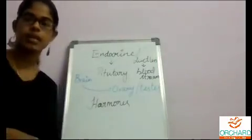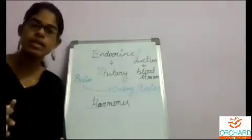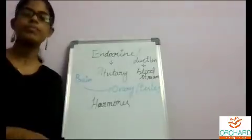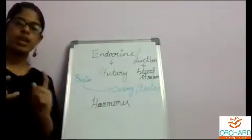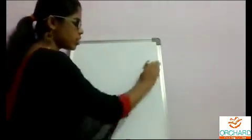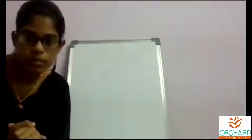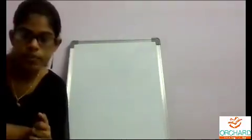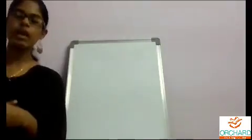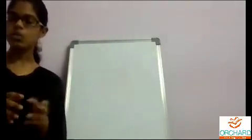Yes — exocrine has ducts and secretes enzymes, whereas endocrine does not have ducts, it's called ductless organ, and it secretes hormones. Very good — that's the right answer. I hope you're clear with these two. Please turn to page number 140 where you have the definition for exocrine gland and endocrine gland.